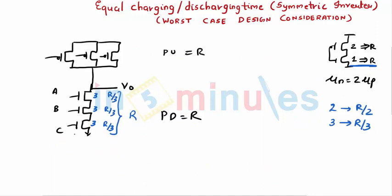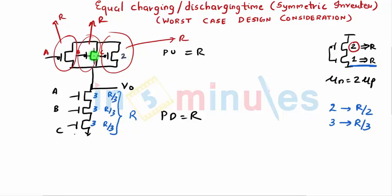For the pullup also it becomes very simple now. We have to presume only one of the transistors to be on, and when one of them is on, either this is on or this is on or this is on, it has to give us an R resistance. And we know that that happens when W by L of PMOS is 2, I get a value of resistance as R, so it's very straightforward. Any one of them could be on and has to give us R, so it has to be 2.